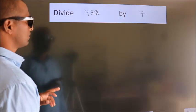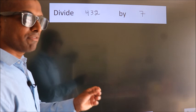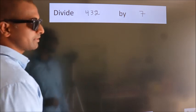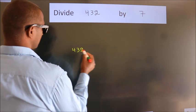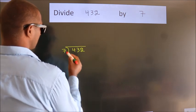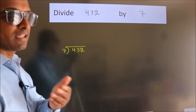Divide 432 by 7. To do this division we should frame it in this way. 432 here, 7 here. This is your step 1.